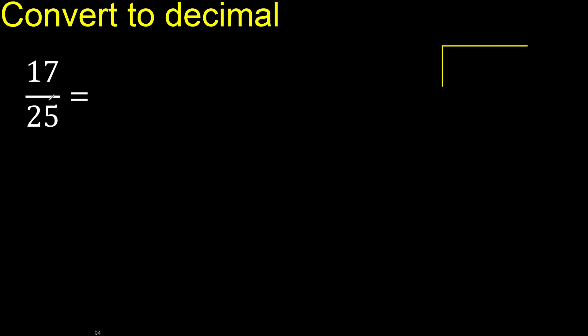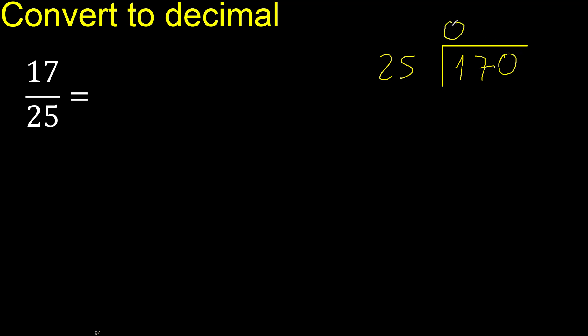17 divided by 25. 17 is less than 25, therefore complete — always complete with 0. Here: 0 point.